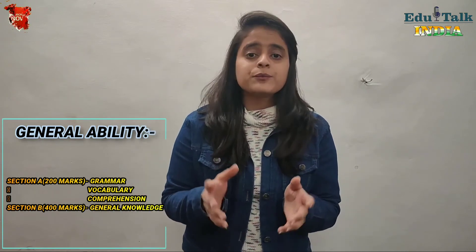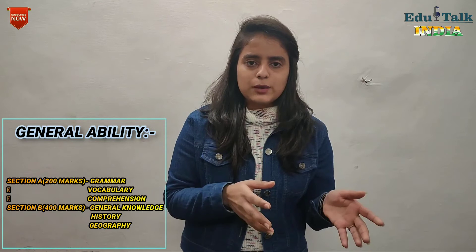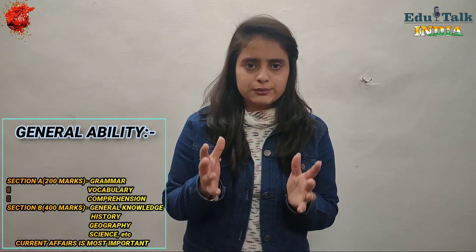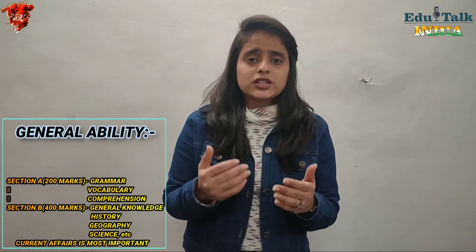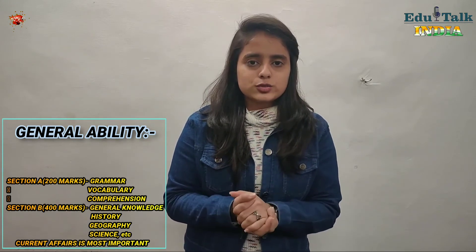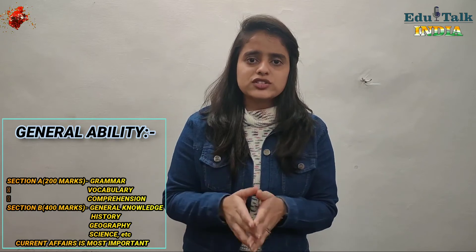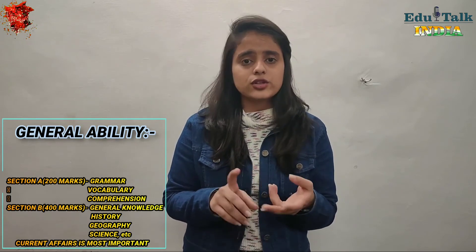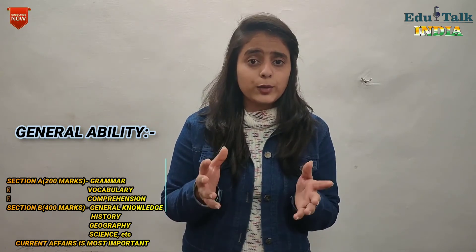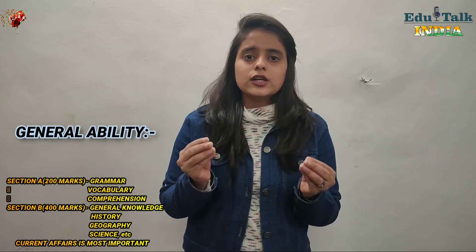Now let's talk about what topics are in General Ability. There are 2 sections — Section A and Section B. In Section A, there are English-related questions like grammar, vocabulary, and comprehension. These questions are worth 200 marks. Section B is 400 marks and includes questions from General Knowledge — topics such as History, Geography, Politics, General Science, Environment, and Economics. Current affairs is also a very important topic in this section.